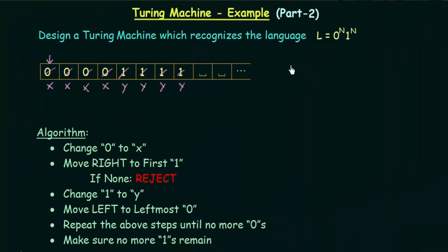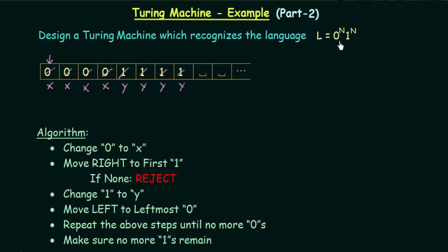Here is the example I was talking about — the Turing machine which recognizes the language 0^n 1^n. If you remember we have already discussed this; if you have not watched it, you can watch it — it is the second example that we discussed in Turing machines. What we were doing was that when we have a string of the form 0 0 0 0 1 1 1 1, which is of this form...